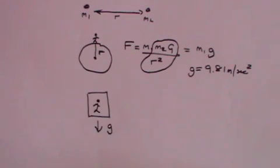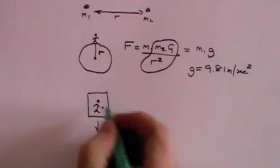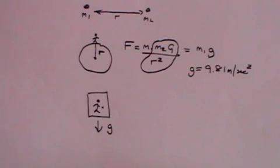inside that box you would feel weightless. You would float. If you had something in your hand and you let go of it, it would simply stay there because it and the box are both falling to the earth at the same rate. So there would be no relative movement and you would feel weightless.